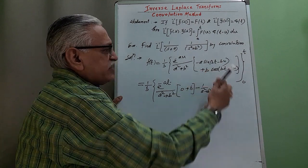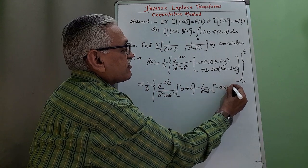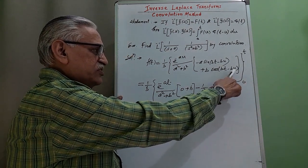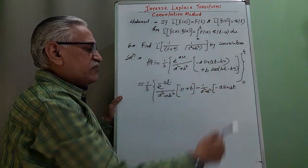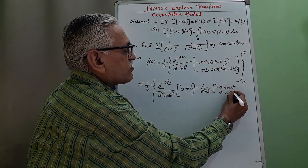u is 0. Therefore, the remaining term is minus a sin bt and u is 0, this term becomes 0. The remaining term is b cos of bt plus b cos of bt.